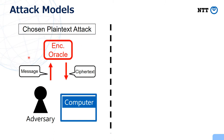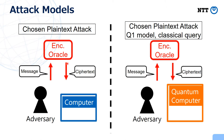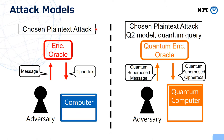This picture illustrates the usual classical chosen plaintext attack: there is an adversary who has a computer and there is an encryption oracle. In the quantum setting, we can consider the situation where the adversary's computer is replaced with a quantum computer — this model is called the Q1 model. In the Q2 model, both the encryption oracle and the communication channels are replaced with quantum ones, so the adversary can make queries in quantum superpositions and receive responses also in superposition.